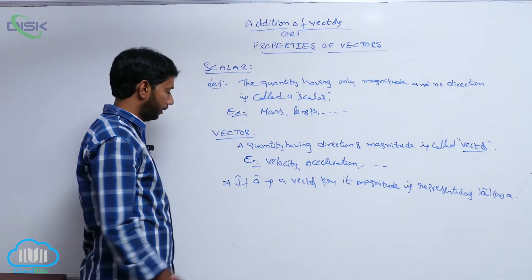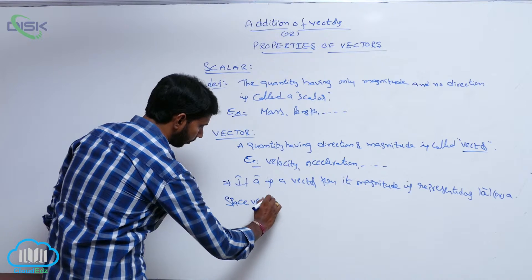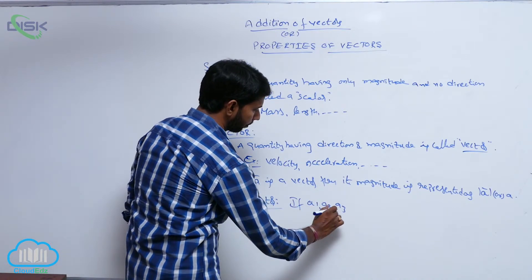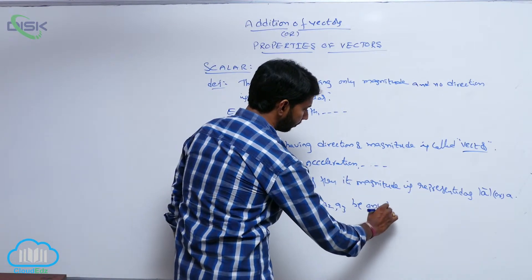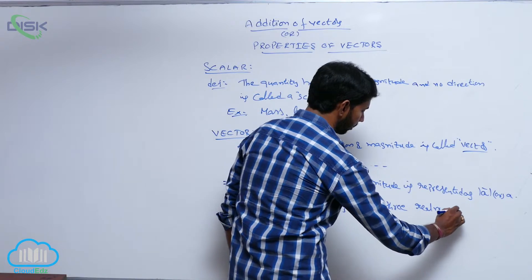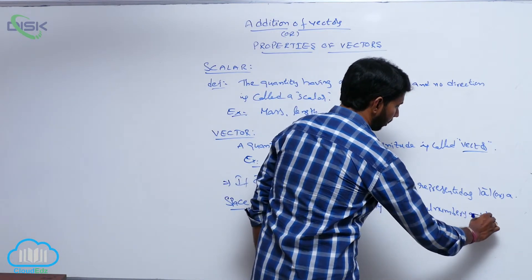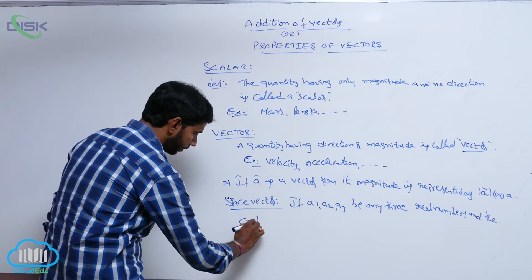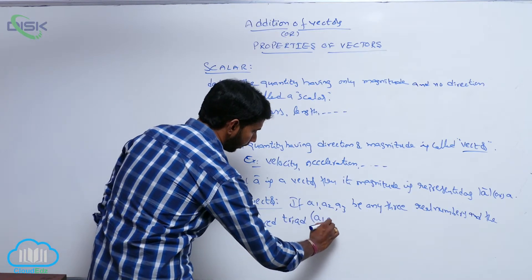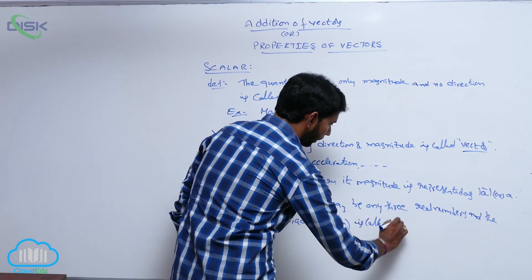Next, the space vector. If a1, a2, a3 be any three real numbers, then the ordered triad (a1, a2, a3) is called a space vector.